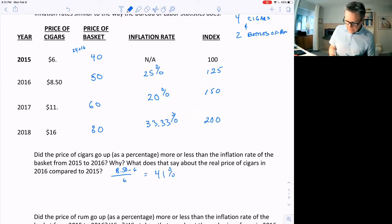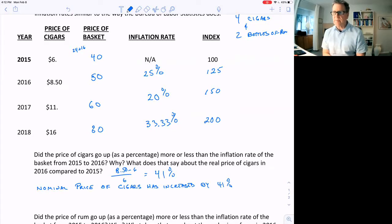So the nominal price of cigars from 2015 to 2016 has increased by 41%. The basket, though, has only gone up 25%. So the price of cigars have gone up more than the average in the basket.